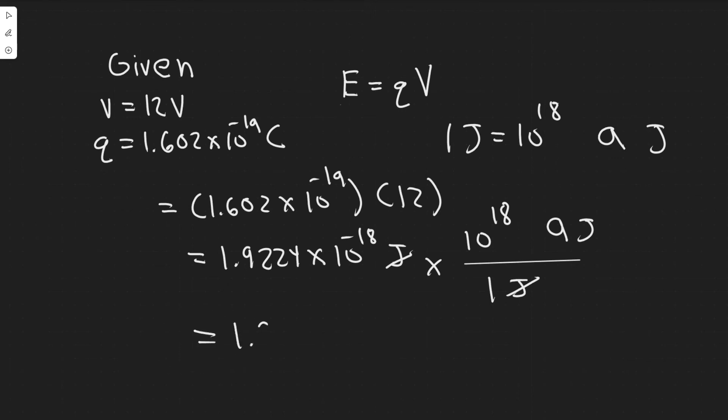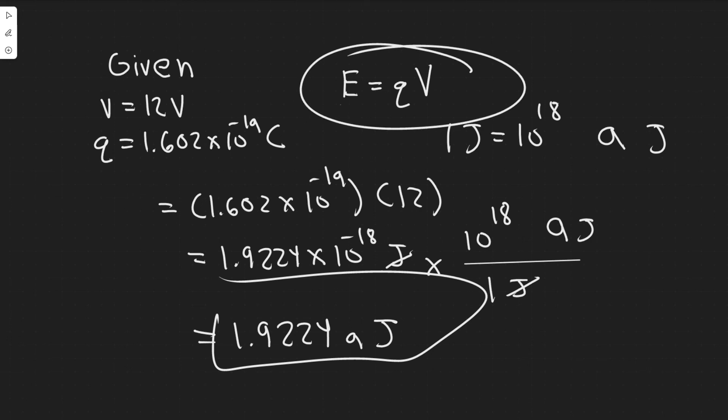So in this case, it's 1.9224, and then our answer is now in atto joules. You can round however you want or however your teacher wants you to, but essentially, you just need to know this equation right here in order to solve this problem, and then a basic conversion. Hopefully you found this useful.